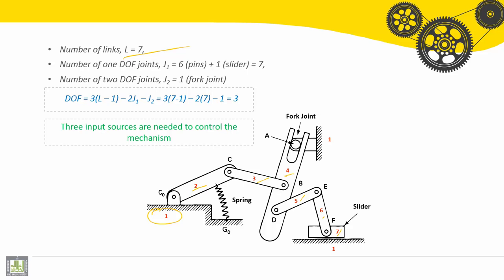Number of lower pair joints, J1. We have six pins for rotation: first one, 2, 3, 4, 5, and 6. And we have one slider here.